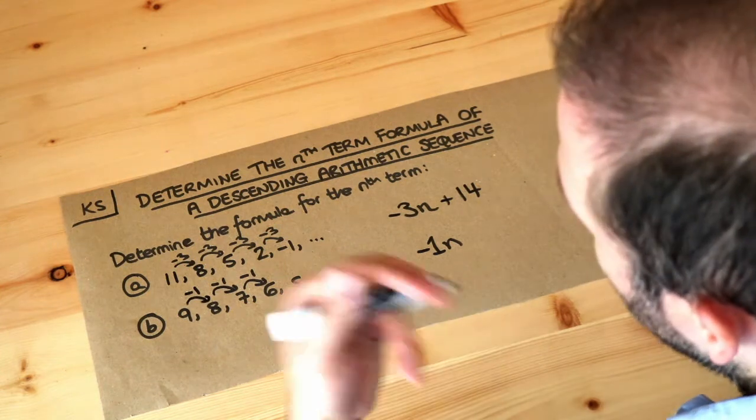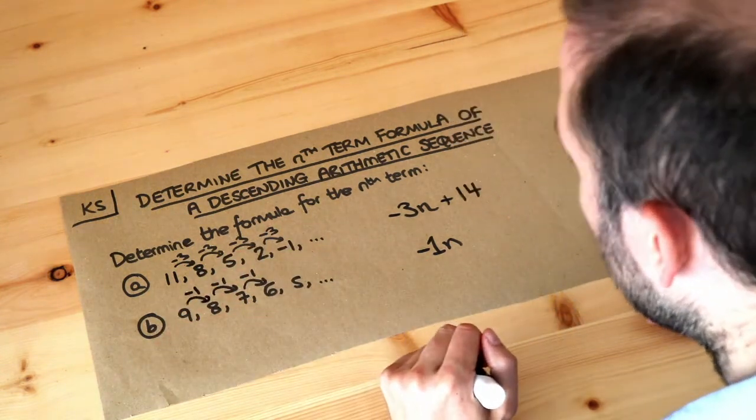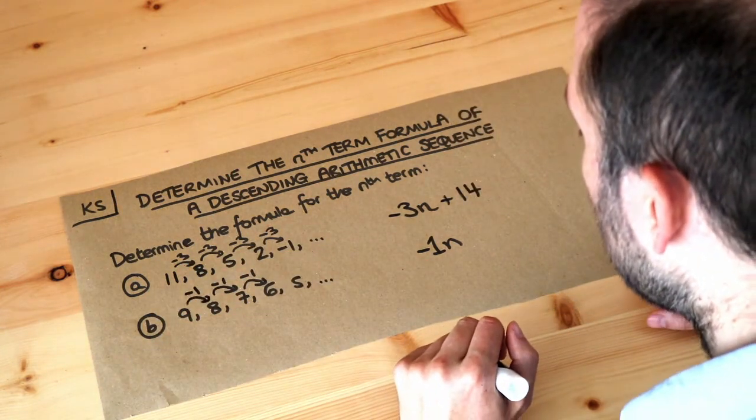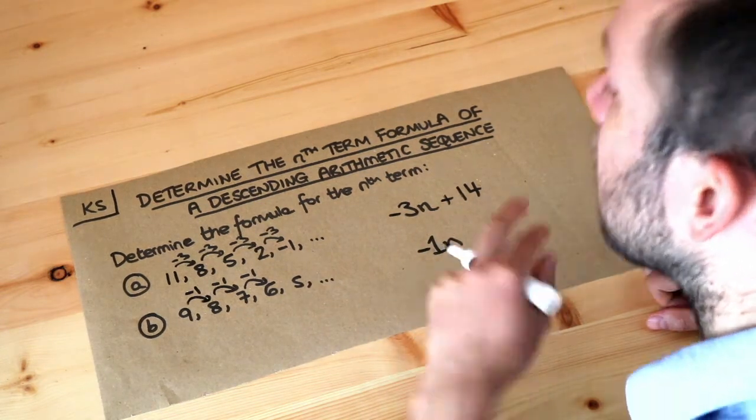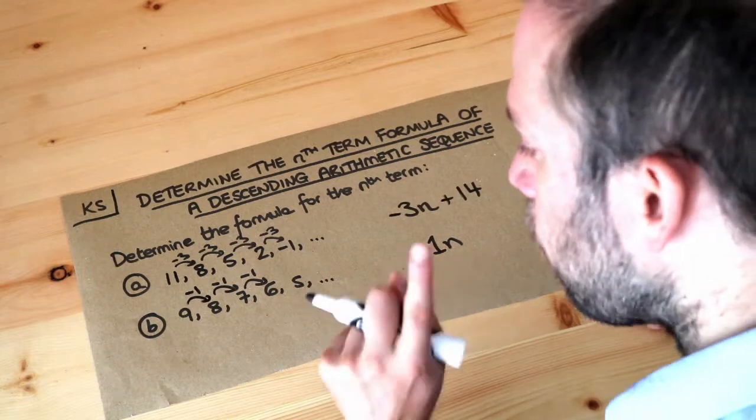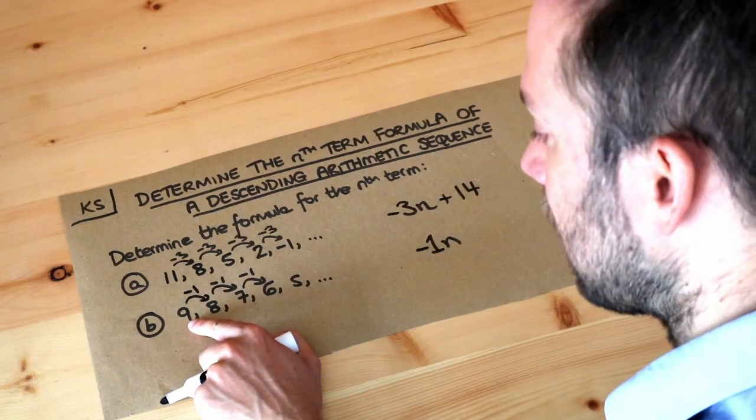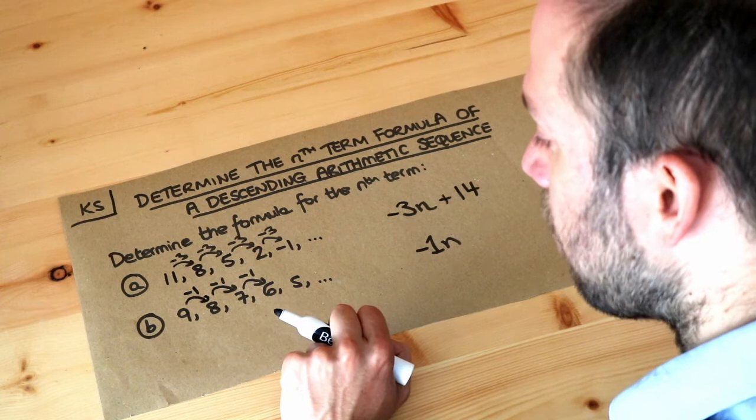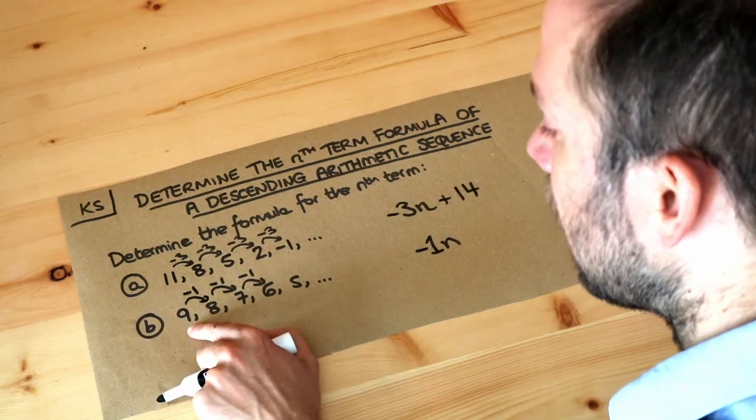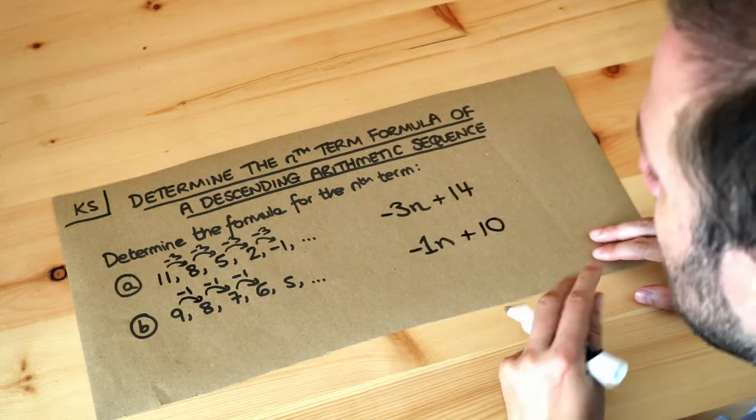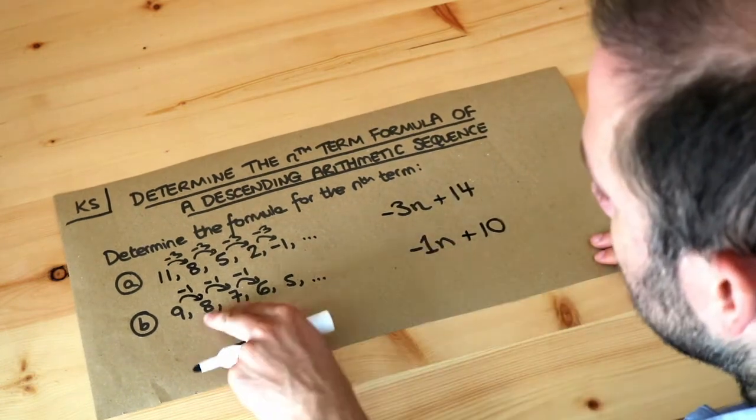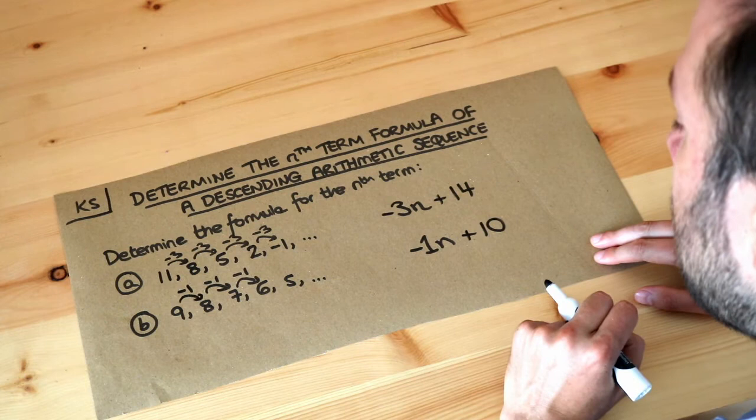And then we think well what would the first term of our sequence be? Well we want the first term, we do minus 1 times 1 which is minus 1, but we don't want minus 1 as a first term we want 9. So what do we do to get from minus 1 to 9? Well we need to add 10, so you put plus 10 here and that fixes it. And again you could check this formula works for the second term to be absolutely sure that your answer is right.